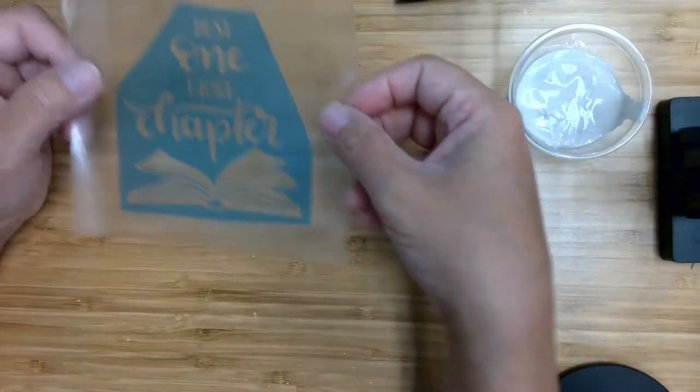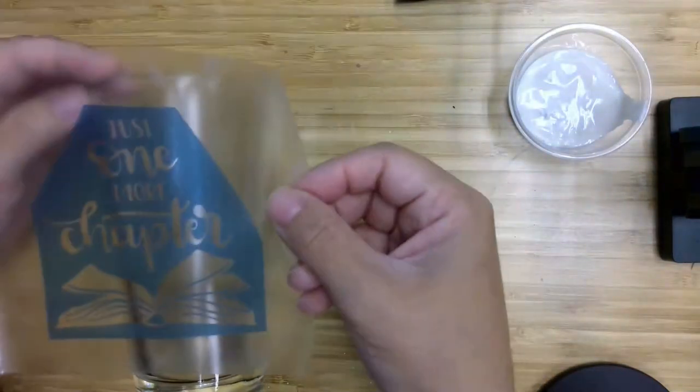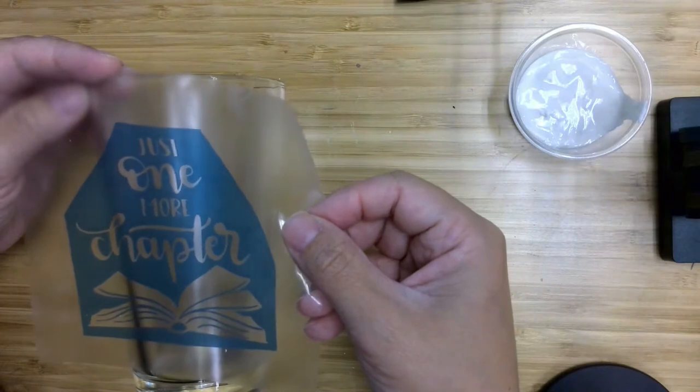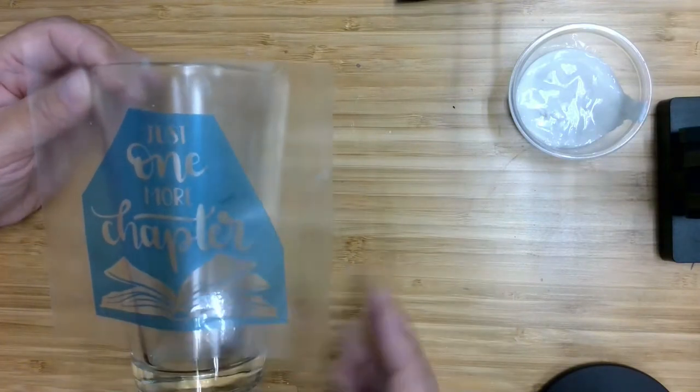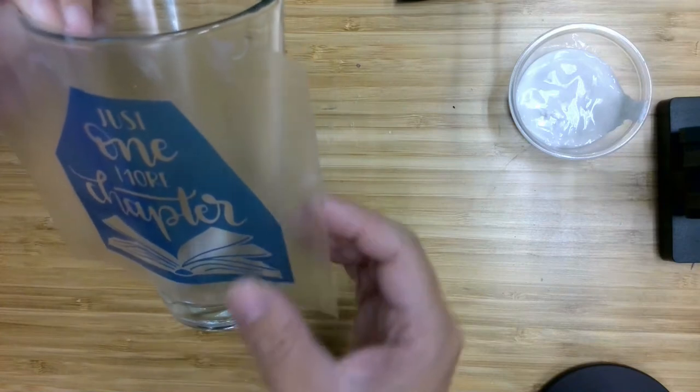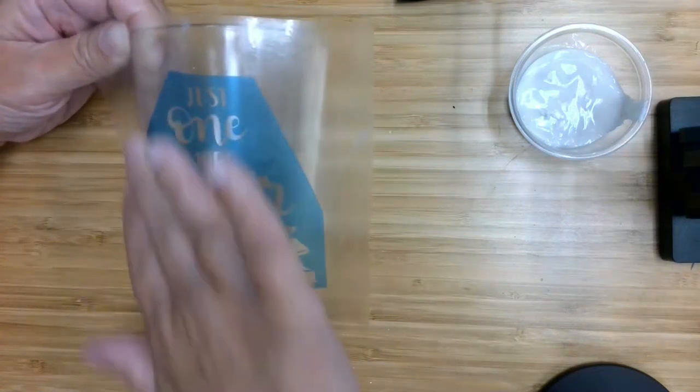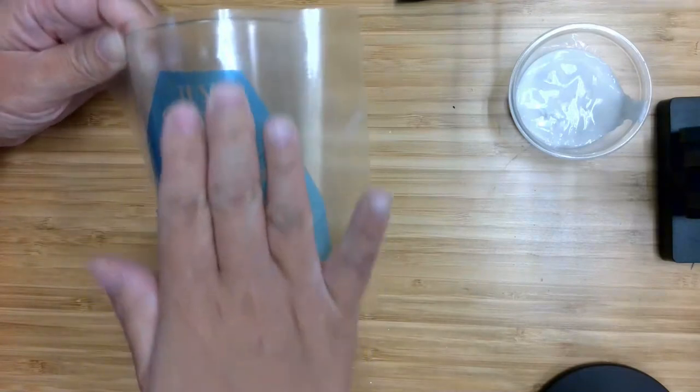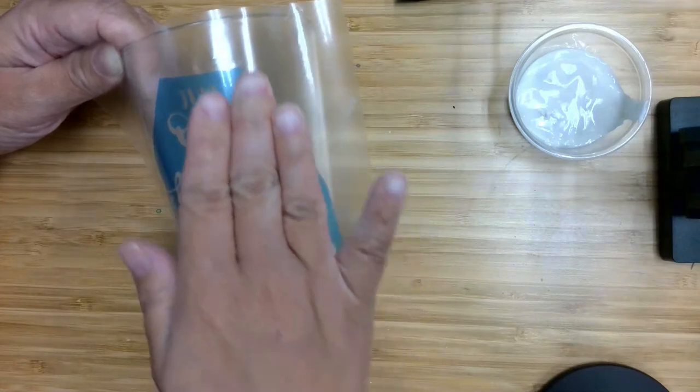And now this is going to get applied to your glass. Just try to line it up so that it's straight. Okay, and you're just going to rub. You want the blue vinyl to stick to the glass.